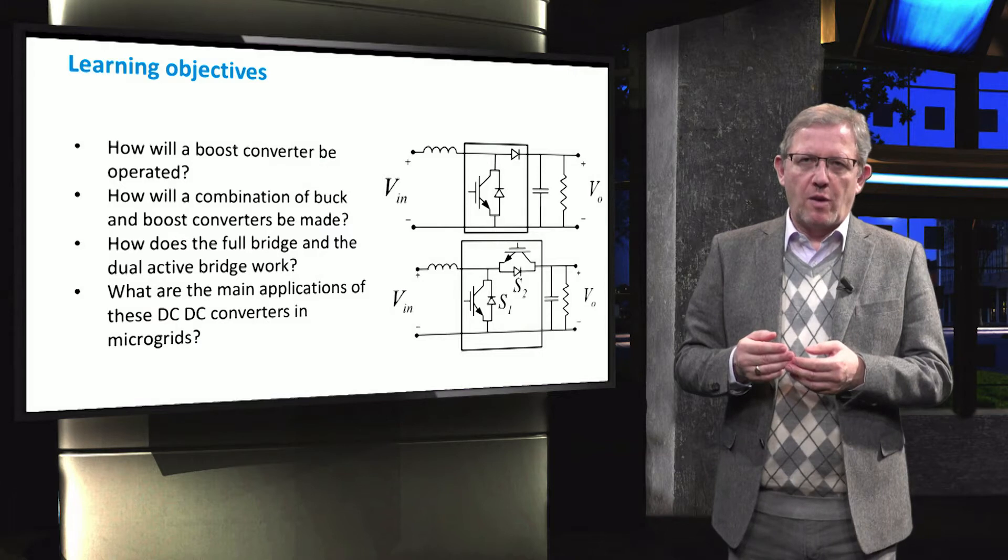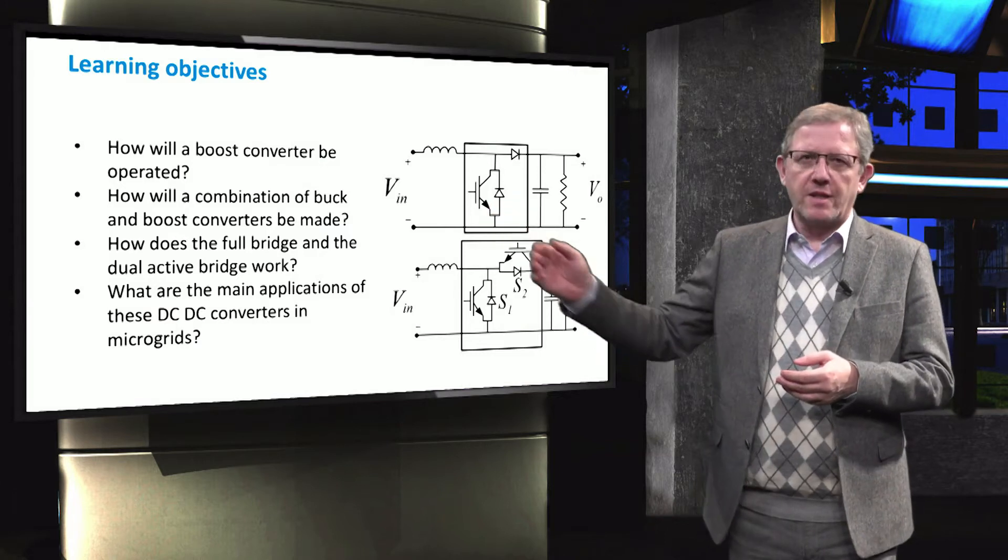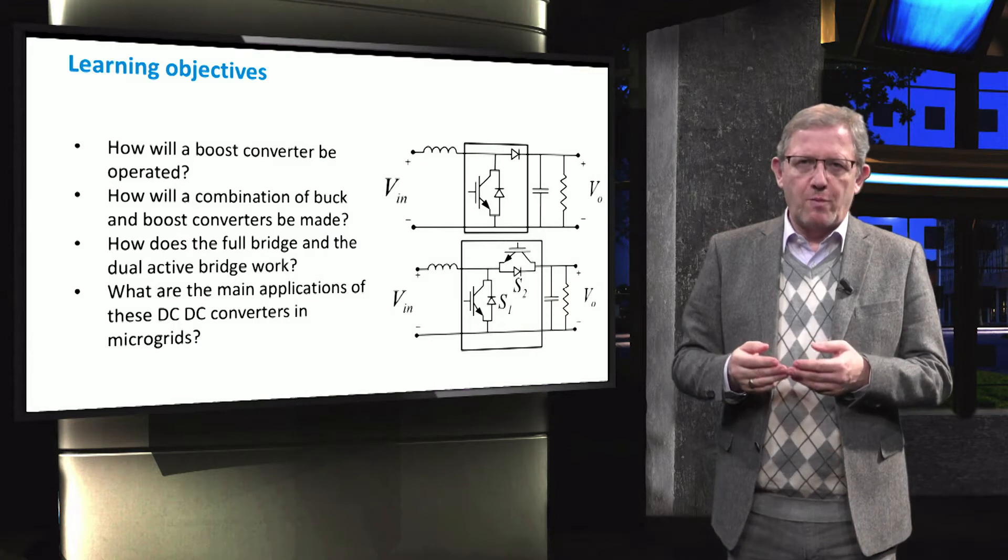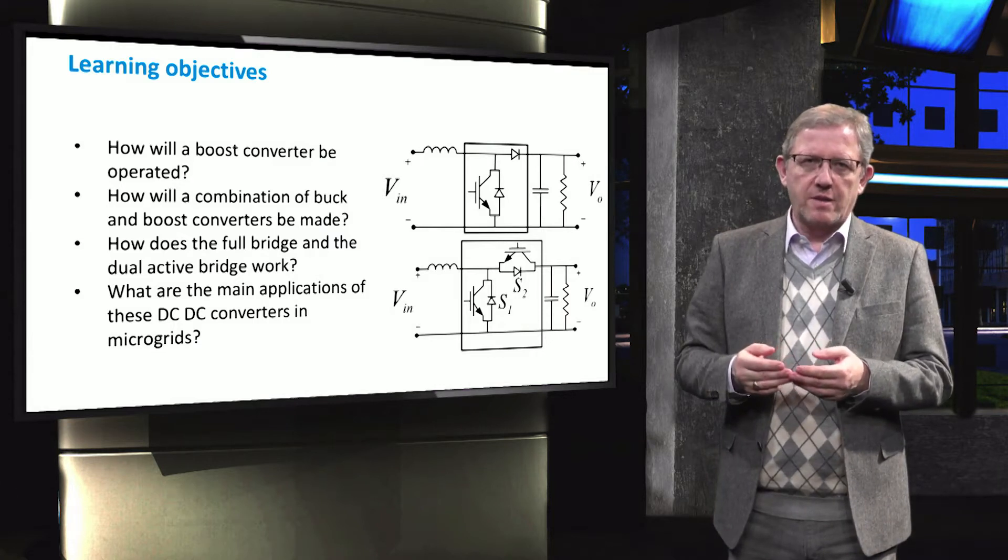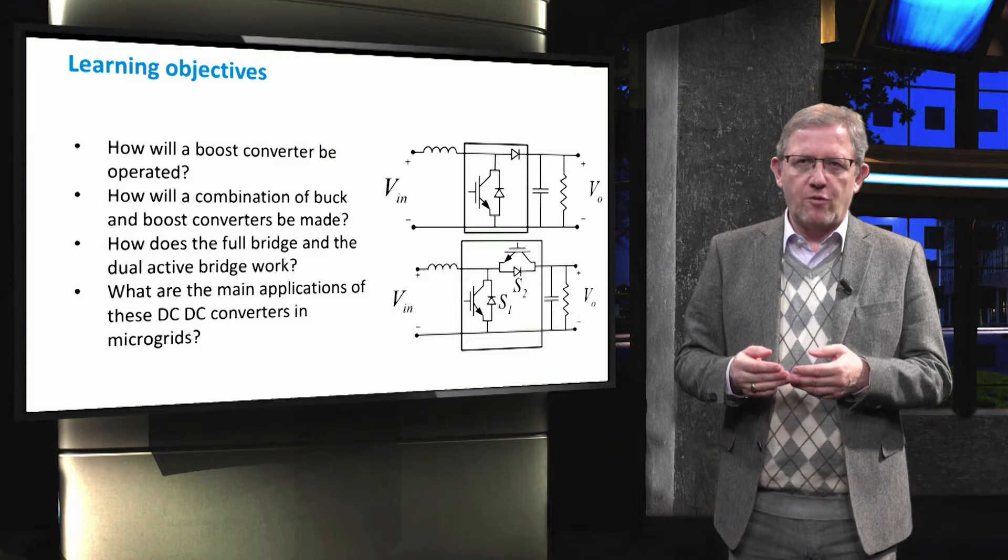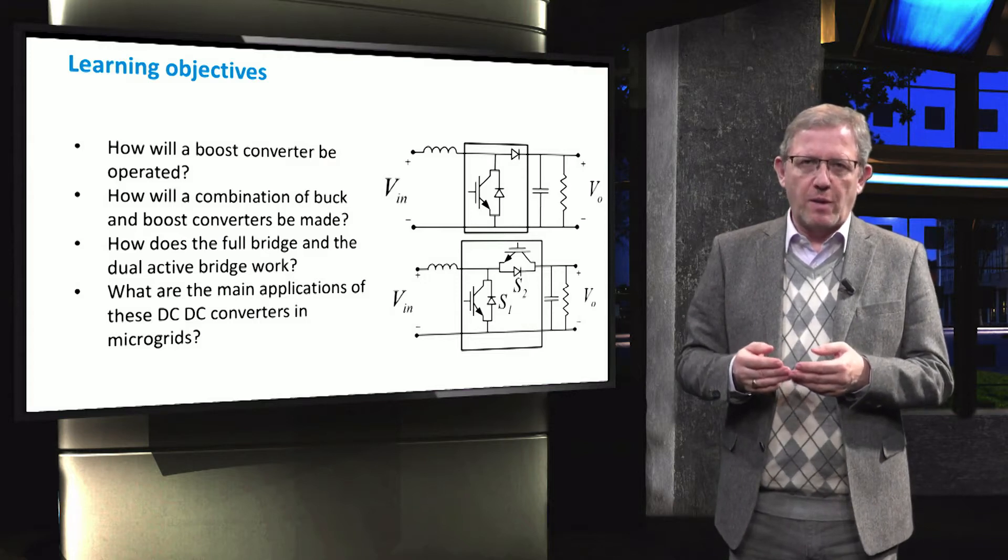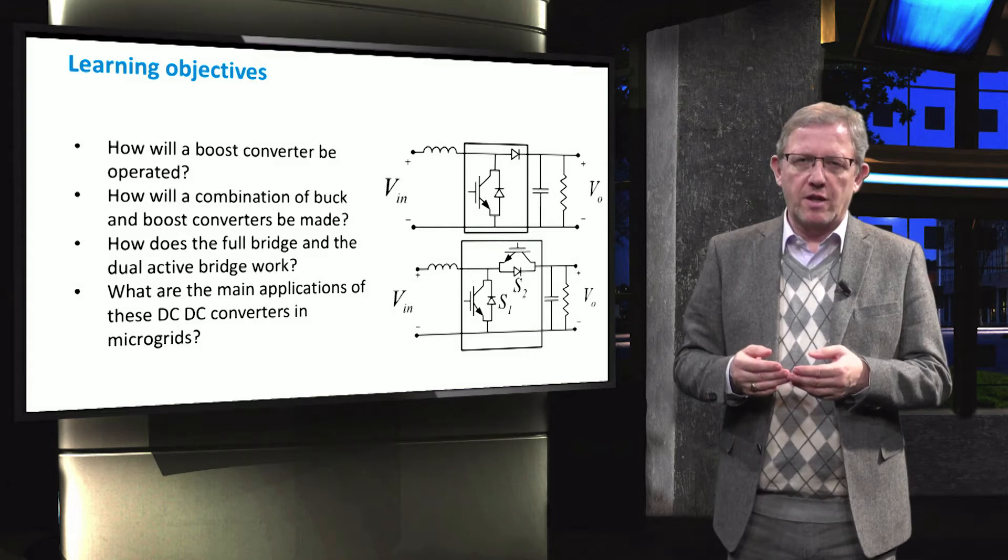First, how will a boost converter be operated? Secondly, how will a combination of a buck and boost converters be made? And thirdly, how does the full bridge and dual active bridge work? And fourth, what are the main applications of these DC-DC converters in the microgrids?